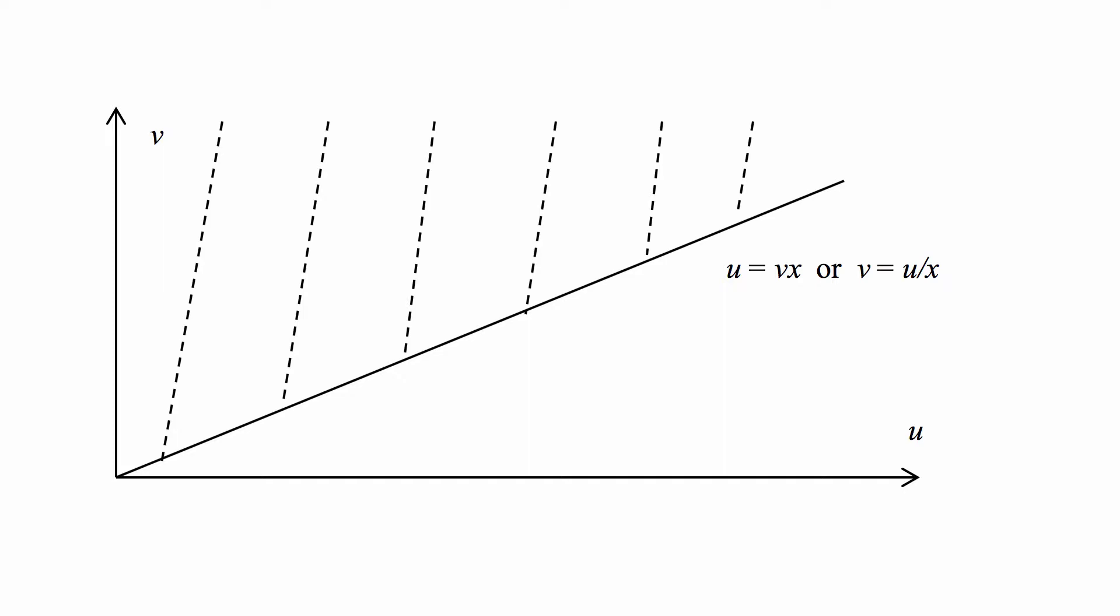The line at an angle going through the origin is where u = vx or v = u/x, because x is defined as u/v. If we have a specific value of x, then all the points where u = vx lie along a line like this.